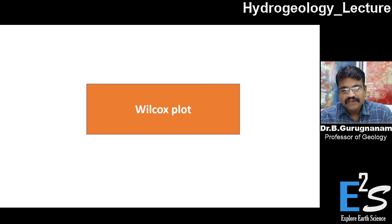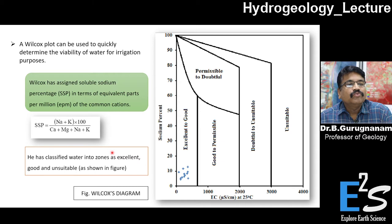We will discuss the Wilcox plot interpretation and its suitability of groundwater. Wilcox plot can be used quickly to determine the variability of water for irrigation purposes. This plot is exclusively used for assessing whether the water is good for agriculture or cannot be used for agriculture.